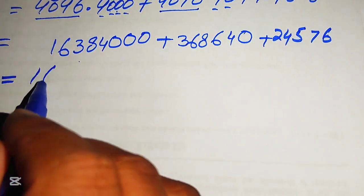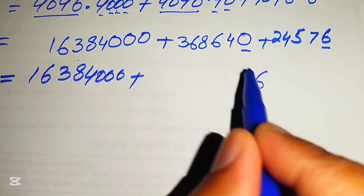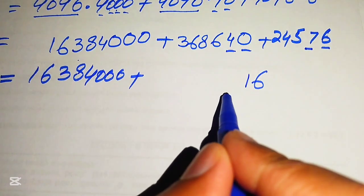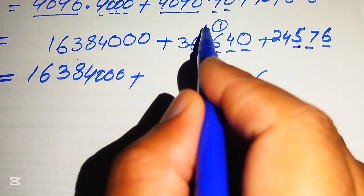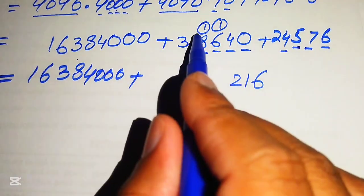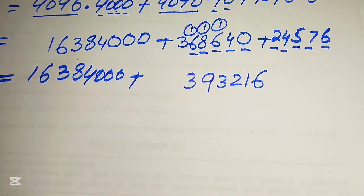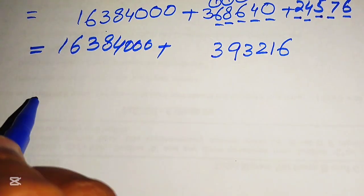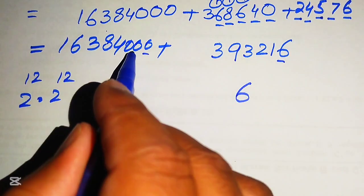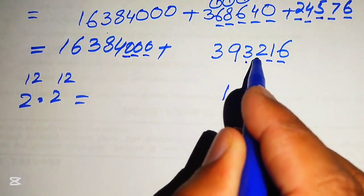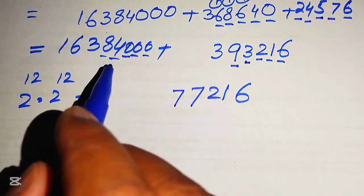Now we sum up the three partial products. We write 16,384,000 as it is, then add 368,640 and 24,576. Adding column by column: 0 plus 6 is 6; 7 plus 4 is 11 (write 1 carry 1); 6 plus 5 plus 1 is 12 (write 2 carry 1); 8 plus 4 plus 1 is 13 (write 3 carry 1); 6 plus 2 plus 1 is 9; and 3, giving the intermediate sum.